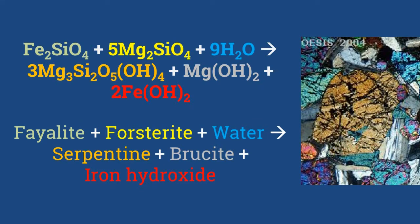Through serpentinization, olivine can be transformed into serpentine, and this process is generally described through the above reaction. This light brown colored mineral in the picture is olivine in basalt undergoing alteration to serpentine, and the black cracks in olivine are the linings of brucite and iron hydroxide.